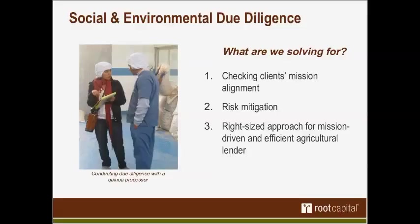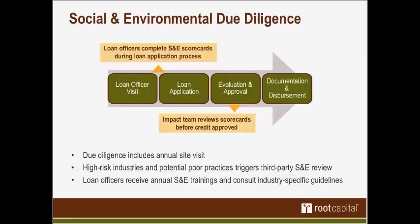How does the due diligence work? The social and environmental due diligence is integrated with our financial due diligence process. It is conducted by our loan officers, who are based in the regions where our clients are. With each client, the loan officer conducts a site visit annually — getting to know the management team, observing operations, meeting and interacting with producers and employees, and verifying social and environmental practices. The loan officers then consolidate this information and record it in standardized social and environmental scorecards, which they submit as part of the credit memo. A member of our small impact team also reviews the social and environmental scorecards.